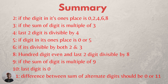A number is divisible by six if it is divisible by both two and three. A number is divisible by eight if the hundreds place digit is even and the last two digits are divisible by eight. A number is divisible by nine if the sum of its digits is a multiple of nine. A number is divisible by ten if the digit in its ones place is zero. A number is divisible by eleven if the difference between the sum of alternate digits is zero or eleven.